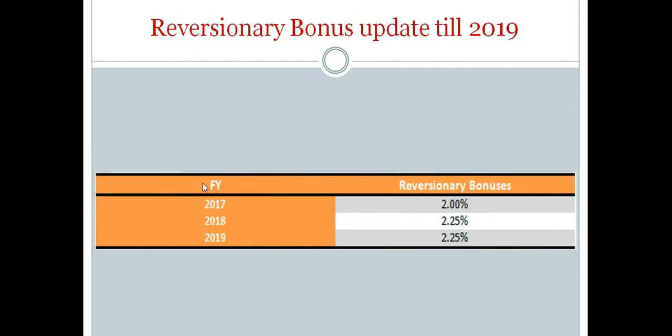Regarding reversionary bonuses — we were talking about 4% or 8%, but since the last three years it has been only 2% to 2.25%. In 2019, it was only 2.25%. So it actually varies each year.